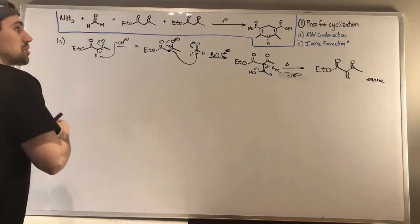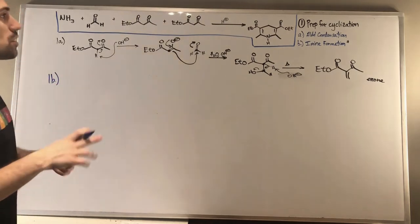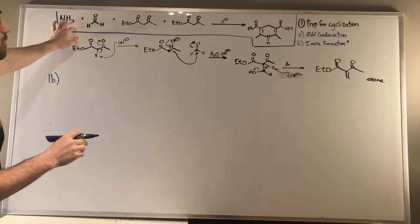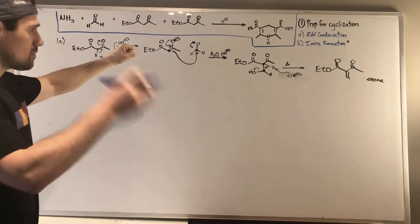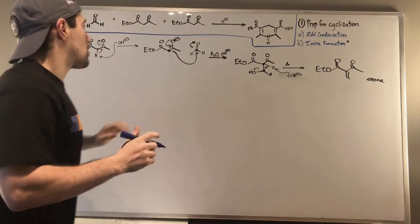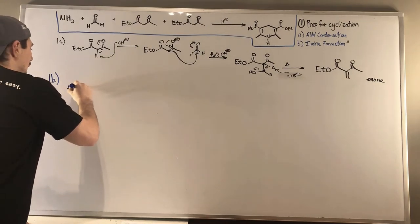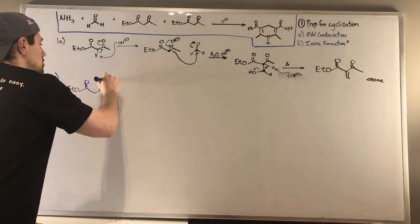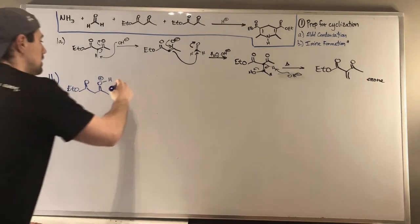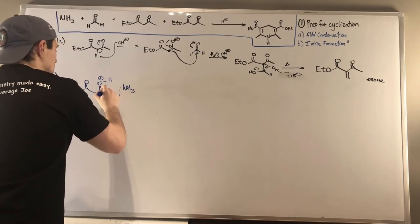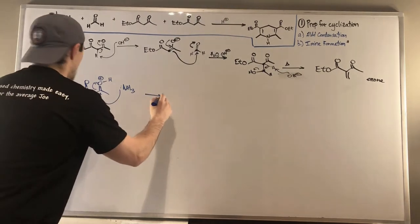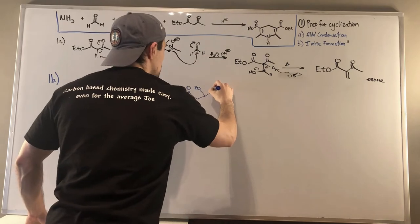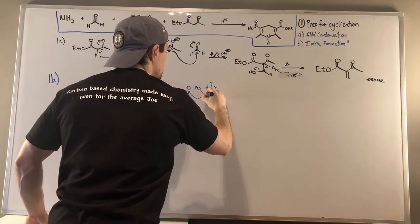That was step 1A. Now step 1B: imine formation with a slight twist. We're grabbing our primary amine — ammonia — and the other available carbonyl is another one of the beta-dicarbonyls. Ketones are more reactive than esters, so we do imine formation at the ketone. We protonate the carbonyl oxygen to make it more reactive, ammonia attacks, forming a tetrahedral intermediate with an OH and an NH3 giving a positive charge on nitrogen.